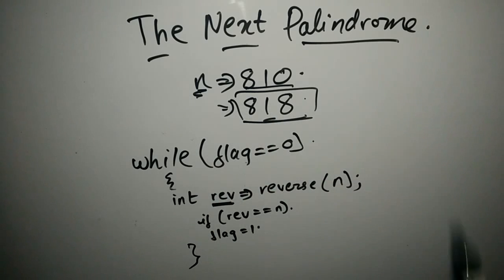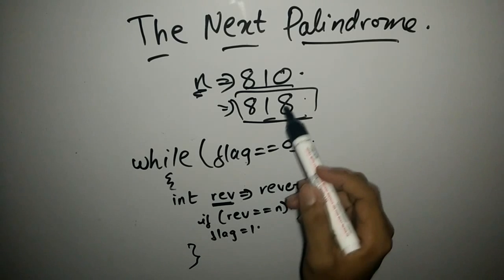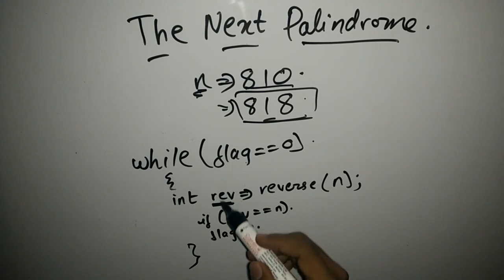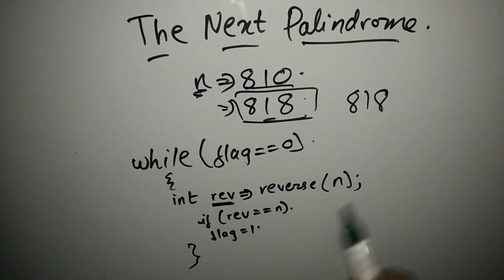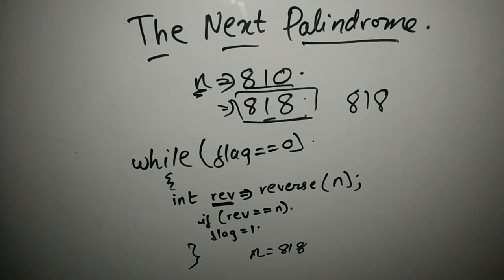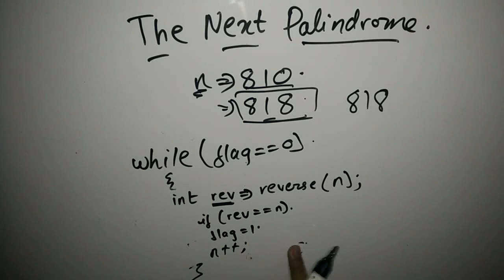In this example, N is equal to 810. Since flag equals 0 by default, we check: the reverse of 810 is 018, which is not equal to 810, so the flag won't become 1 and the loop continues. When we reach 818, the reverse is also 818. Our original number is 818, so both numbers are equal, flag becomes 1, we break out, and print N. Of course, in each iteration you have to increment N with N++.